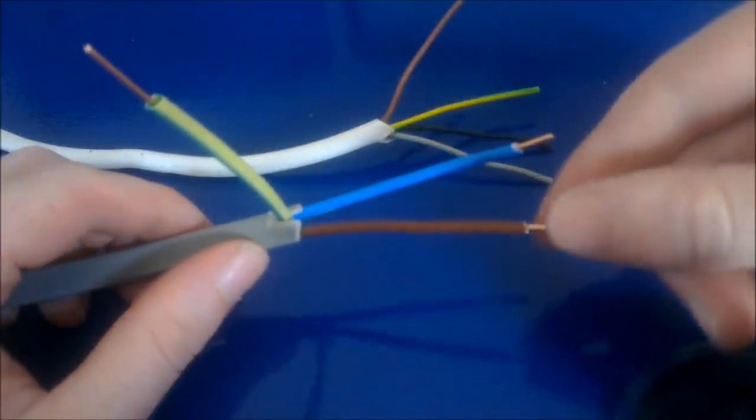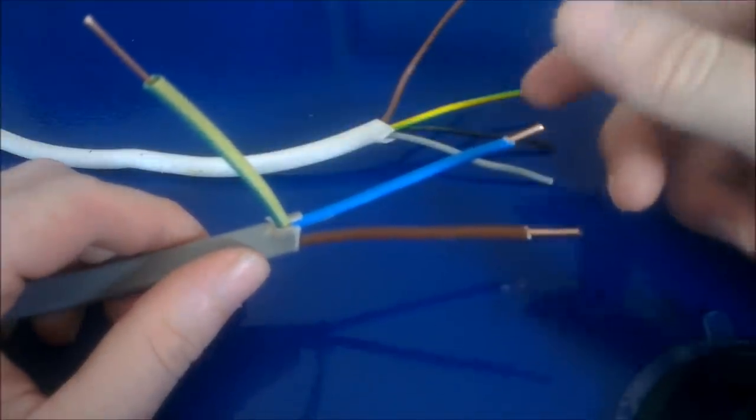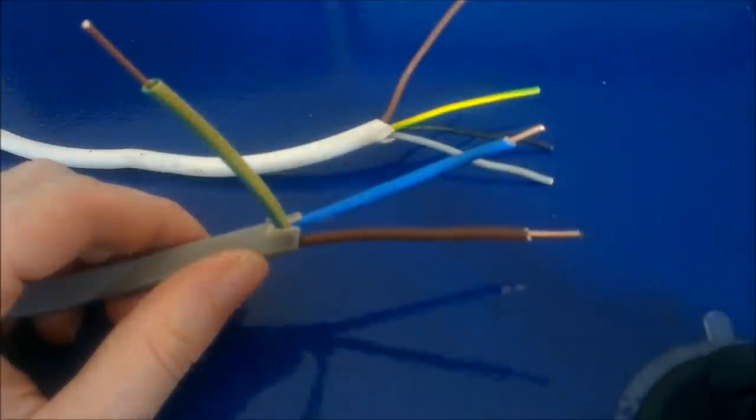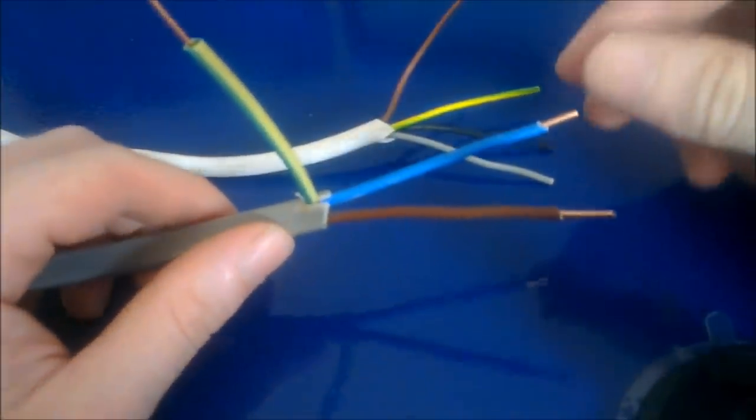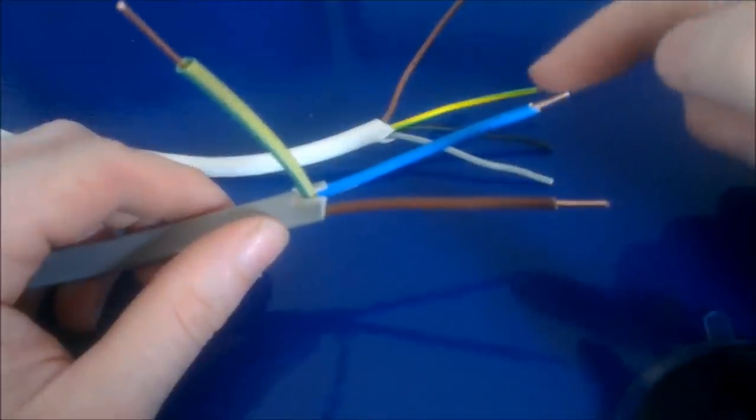In the old cabling, you have red as your live and black as your neutral. So if you're in an ordinary domestic house or anything that is single phase, most likely your black is a neutral wire.